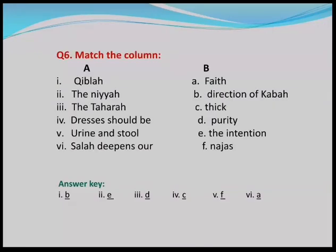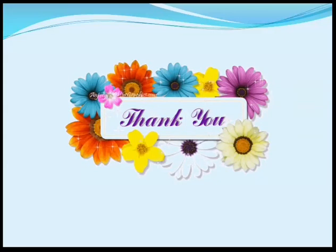The next question is number 6: Match the column. In this question, you will match the words of column A with column B. Column A: Qibla, The Niyah, The Taharah, Dresses should be, Urine and stool, Salah deepens. Column B: A — Faith, B — Direction of Kaaba, C — Thick, D — Purity, E — The intention, F — Najas. The answer key is also given below for your help. Thank you children for watching. Take care. Allah Hafiz.